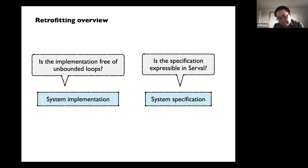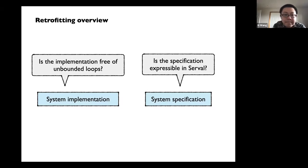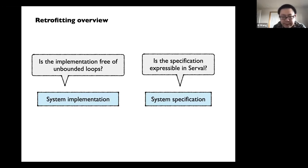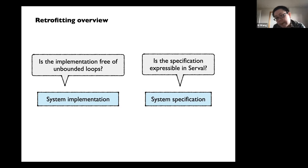The main things you need to go through during retrofitting: first, is the implementation free of unbounded loops? If not, you might want to rewrite your implementation to remove them. Second, is the spec expressible in Serval? Since we want automated reasoning, you can only use a restricted subset of first-order logic. If you have an infinite unbounded number of traces, you need to break them down in a way that you can express the properties you care about. Or maybe you need a different tool.